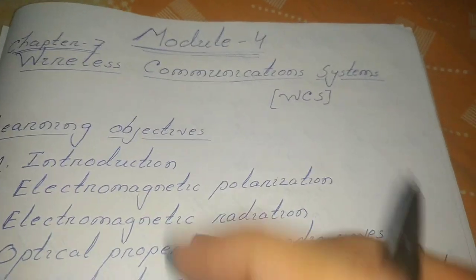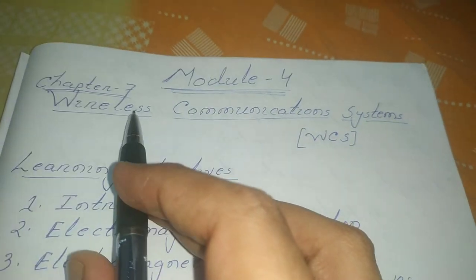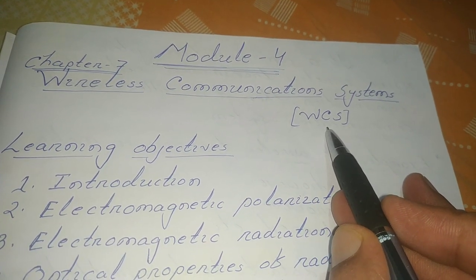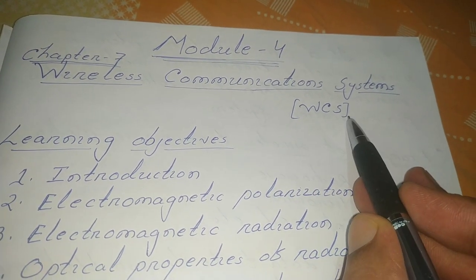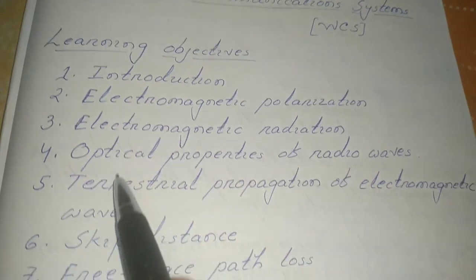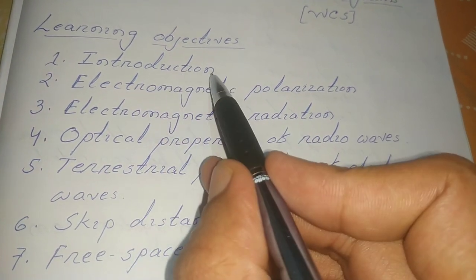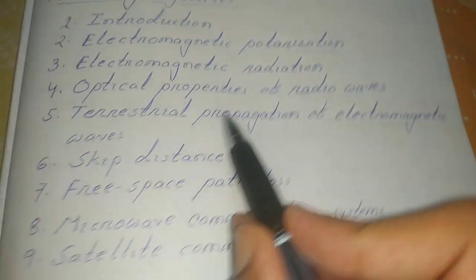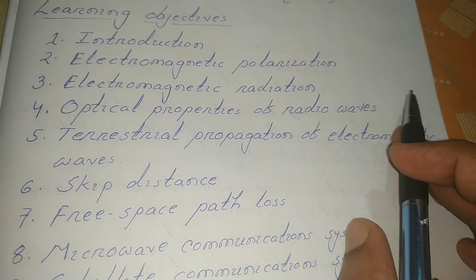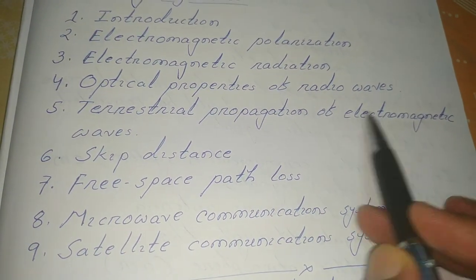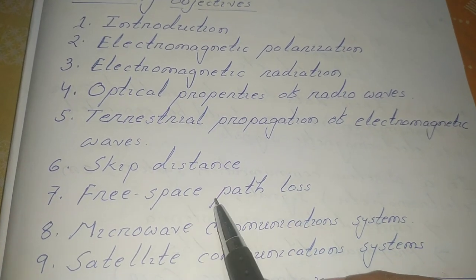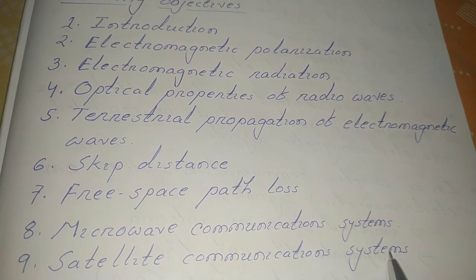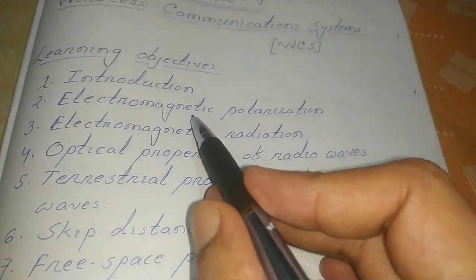Hello students, next we will start Module 4, Chapter 7, which is Wireless Communication Systems, also written as WCS. In this chapter we study these concepts: first the introductory part, then electromagnetic polarization, electromagnetic radiation, optical properties of radio waves, terrestrial propagation of electromagnetic waves, skip distance, free space path loss, microwave communication systems, and finally satellite communication systems.